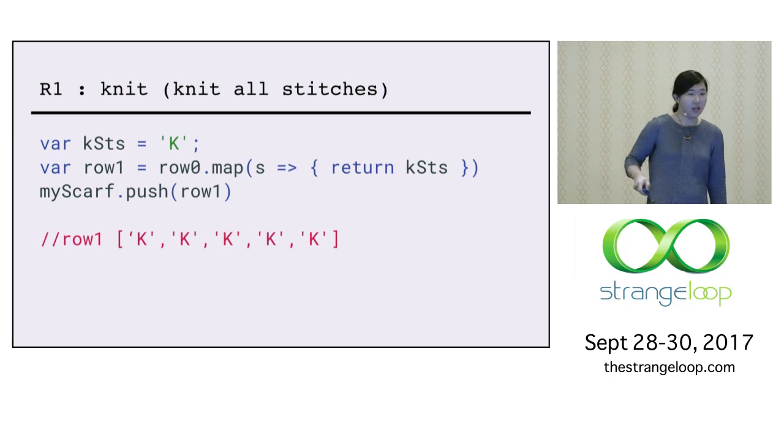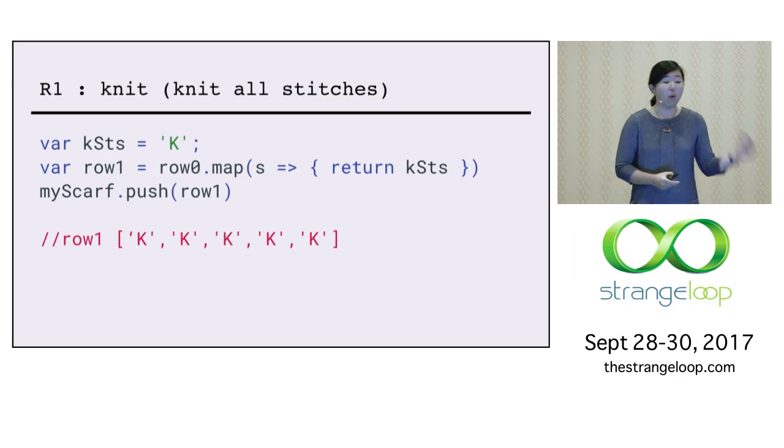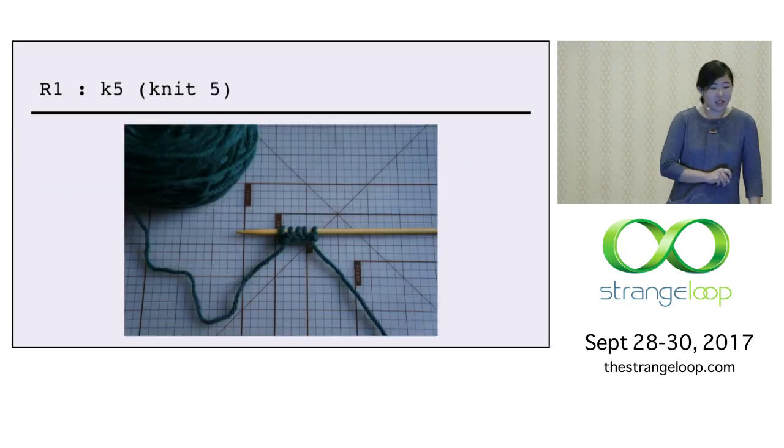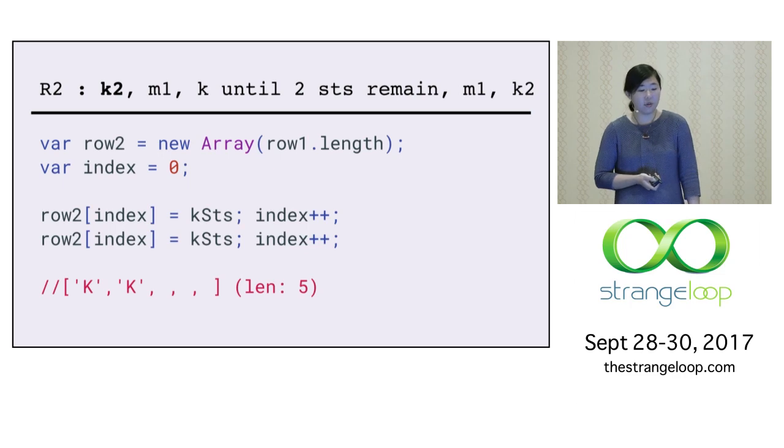Next one is row one, knit. When the pattern says just knit, that means knit however many ever that you have on the needle, just make that knit stitch for it. So the row one is a map of row zero to create this K stitches. Stitches is knitting speak, common abbreviations. So now I can create a row one that has a string K, five of them, because the row zero was five. Next one is a little more complicated, and you can't really solve it with map, because there's so many things going on. So let's do one by one.